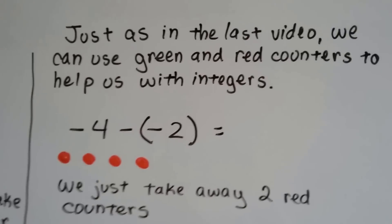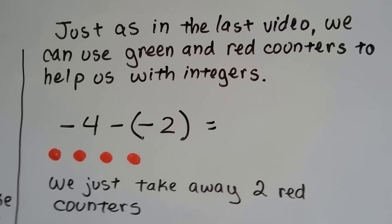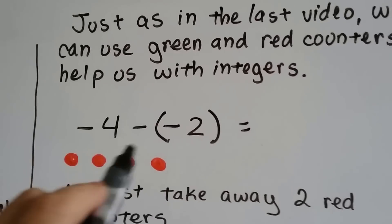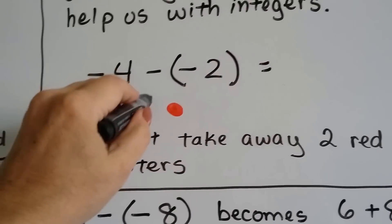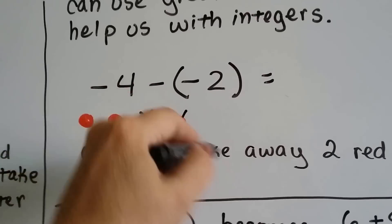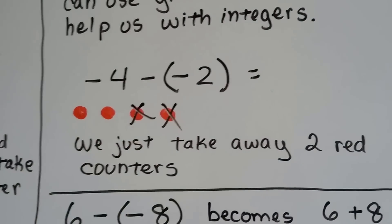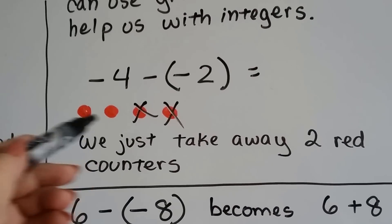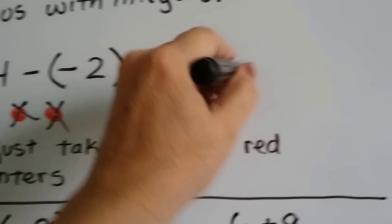Let me show you how to do this with counters. Just like in the last video, we can use green and red counters to help us with integers. If we have a negative 4 and we're taking away a negative 2, that means we're just taking away two of these — we're subtracting two of the negatives. So we just take two counters away. Our answer is two red ones, and red means negative, so our answer is negative 2.